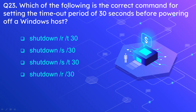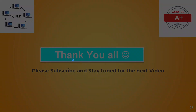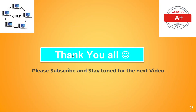Question 23: Which is the correct command for setting a timeout period of 30 seconds before powering off a Windows host? The options are: shutdown /r /t 30, shutdown /s /30, shutdown /s /t 30, and shutdown /r /30. The correct answer is shutdown /s /t 30 — S stands for shutdown, T stands for time, and 30 is the number of seconds. That's all for today. I hope you enjoyed the video. If you haven't subscribed yet, please subscribe to watch the latest and upcoming videos. Stay tuned, thank you all.